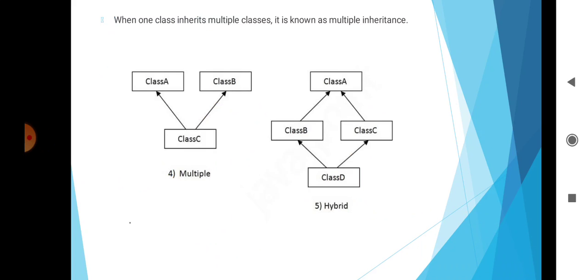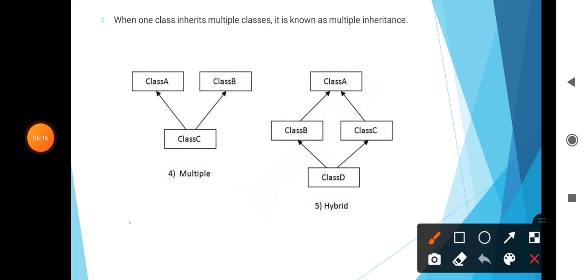When one class inherits from multiple classes, it is known as multiple inheritance. Multiple and hybrid inheritance are not directly supported by Java. By using interfaces, we can support these types. Multiple inheritance involves Class A, B, and C. Hybrid inheritance involves Class A, Class B, Class C, and Class D.